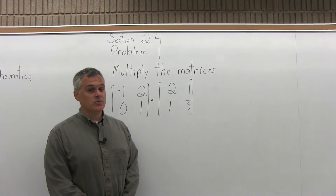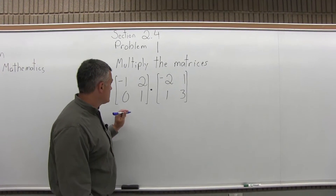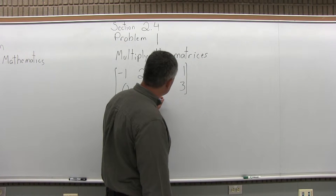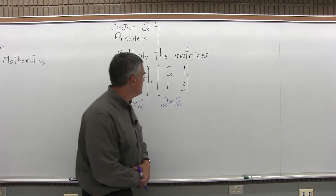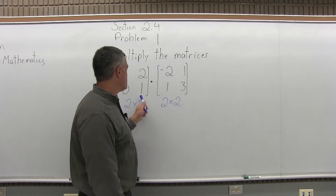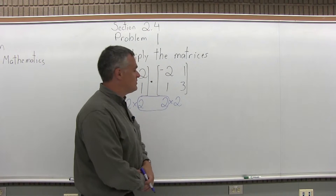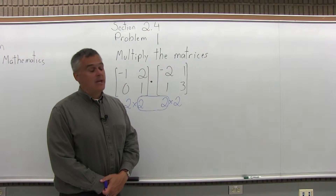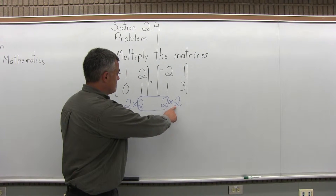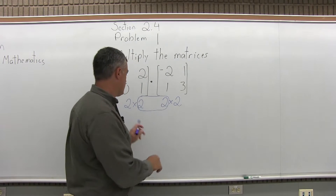The first thing you're supposed to do when you multiply two matrices is check the dimensions and see if there is a solution. The first matrix has a dimension 2 by 2, and the second matrix also has a dimension 2 by 2. What you want to check is that the number of columns in the first matrix is equal to the number of rows in the second matrix. The easy way to do that is when you write the dimensions underneath, see if the inner numbers match. And sure enough, they do, so this problem has a solution. The outer numbers will give you the dimensions of the solution—it's going to have the size 2 by 2.